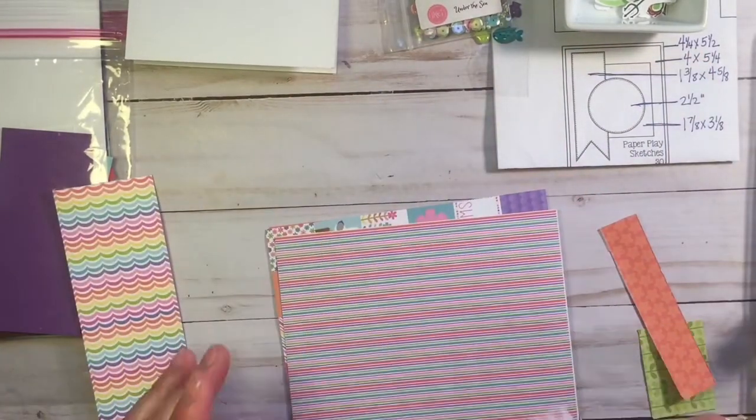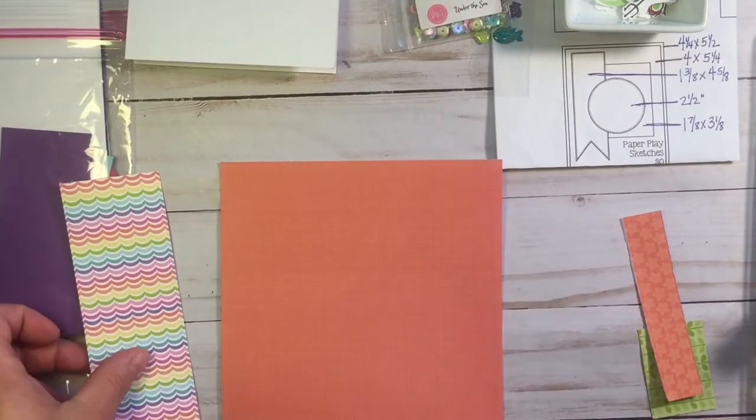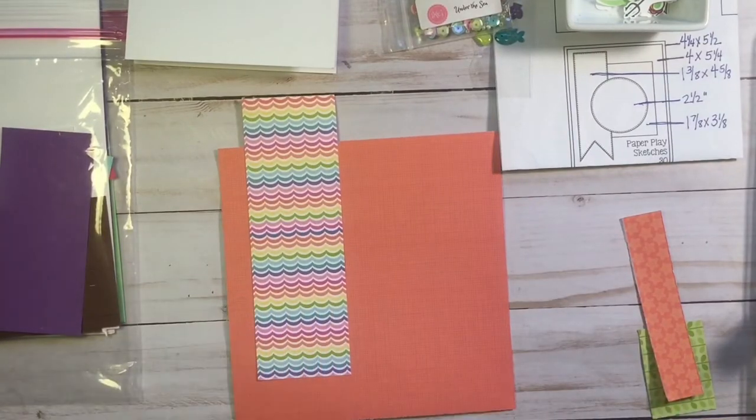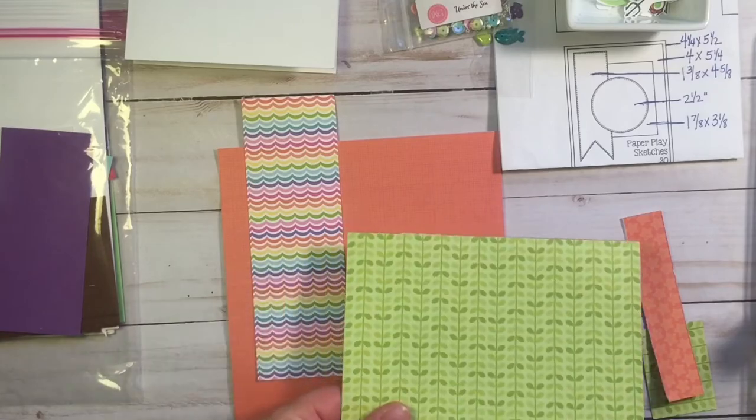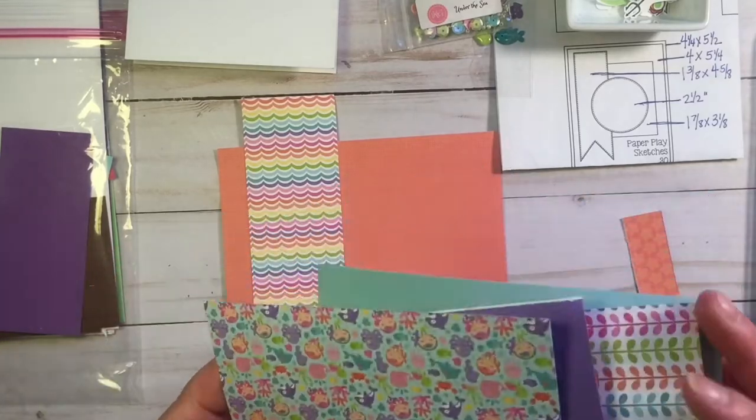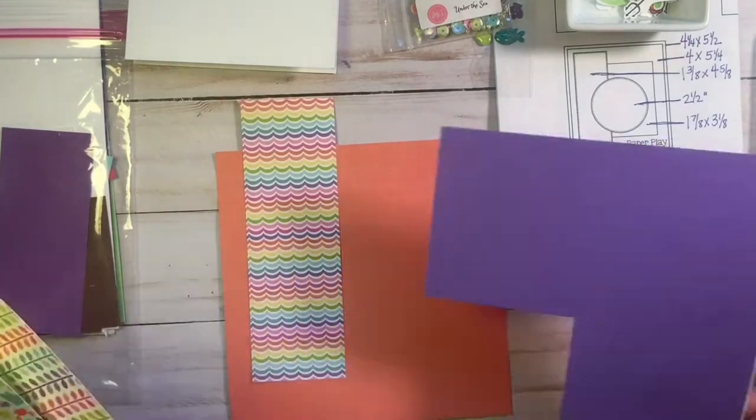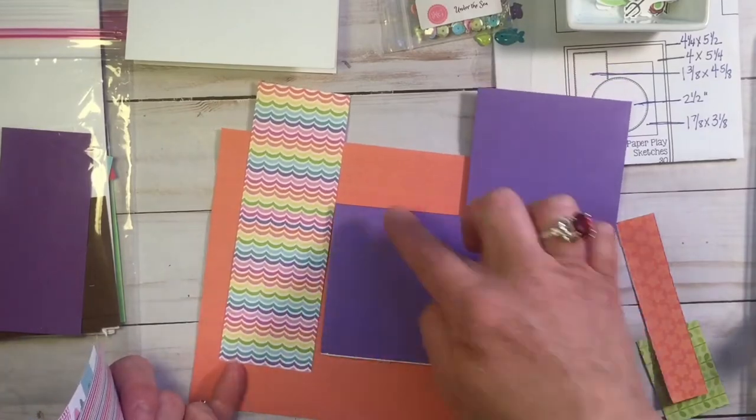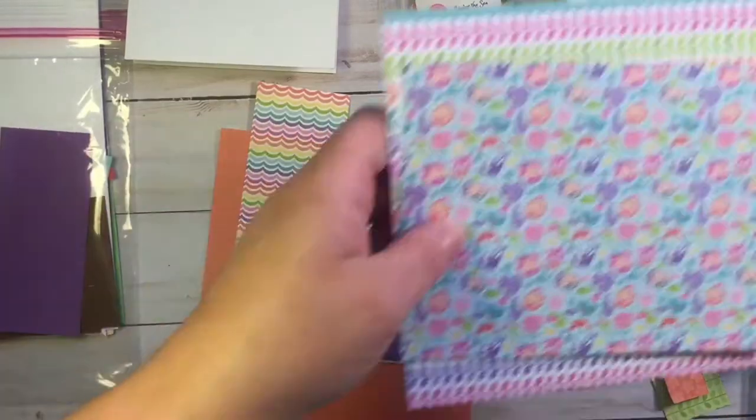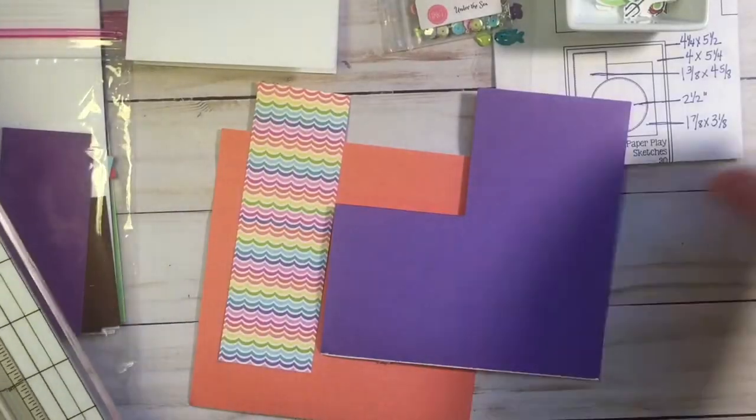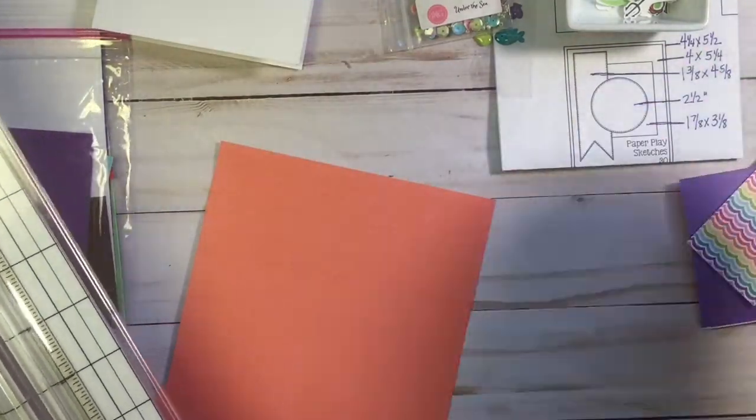The card base is an A2 card, that is cut and scored to be a Portrait Top Fold. So, I'm going to use this orange paper that's got a crosshatch pattern on it, and I'm going to do my flag out of that rainbow wavy, and then I'm going to do the rectangle out of the solid purple.